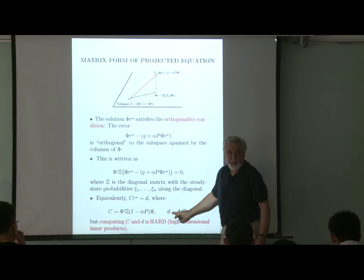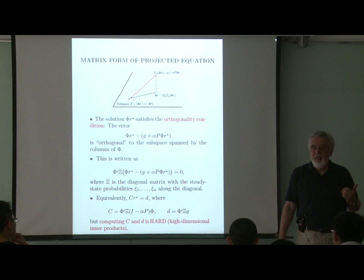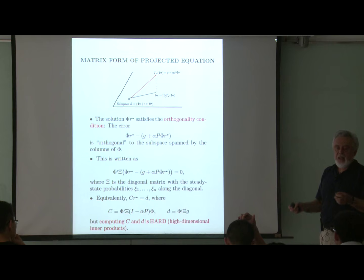The answer to managing these huge inner products is simulation. As mentioned, the primary use of simulation in this context is to make huge inner products manageable — by sampling instead of adding all the terms. Similarly, here we calculate simulation-based approximations of C and D that are manageable, then use the approximations in place of the real things in this equation to get an approximation to r*.